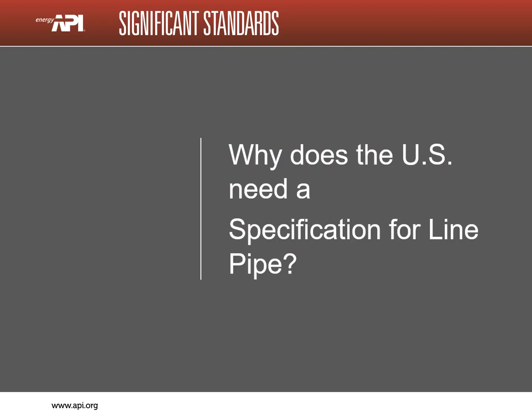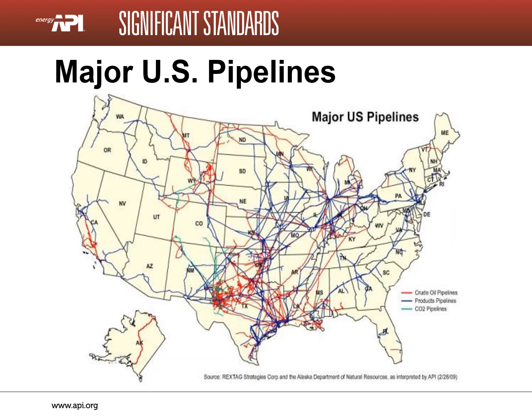So, why do we need a specification for line pipe? This slide shows the major US pipelines that stretch across the country. The color legend describes the purpose for each pipeline. Red denotes crude oil, blue denotes products, and green denotes CO2.